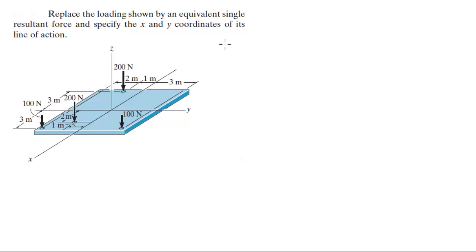You know that the sum of the forces, let's assume going down is positive, are equal to 100 plus 200 plus 100 plus 200 which will give us a total resultant force of 600 newtons.